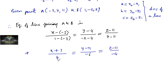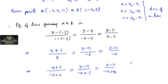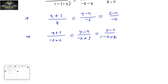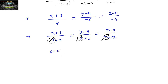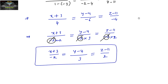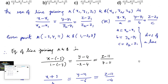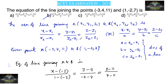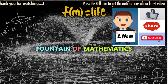The denominators have a common factor of -2, so let us divide by -2. We can write: (x + 3) / (-2 × 2) = (y - 4) / (-2 × 3) = (z - 11) / (-2 × 2). Cancelling the -2, we get: (x + 3) / (-2) = (y - 4) / 3 = (z - 11) / 2. This is the required equation of the line, which corresponds to option B. Option B is the right answer. Please like, share, subscribe and support us. Thank you.